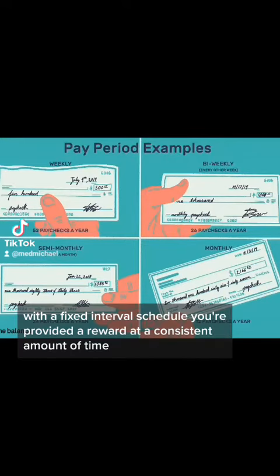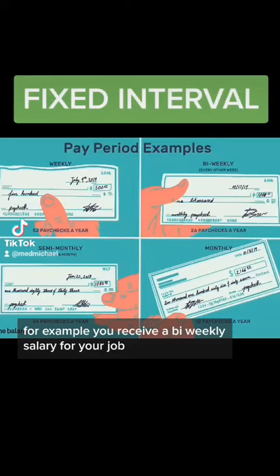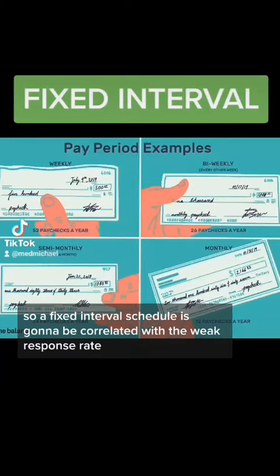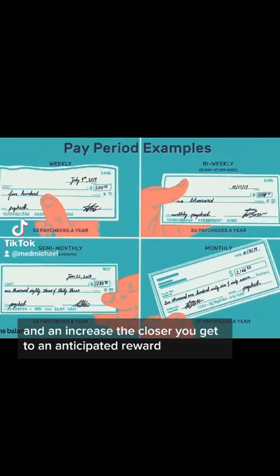With a fixed interval schedule, you're provided a reward at a consistent amount of time. For example, you receive a bi-weekly salary for your job. A fixed interval schedule is correlated with a weak response rate, with an increase the closer you get to an anticipated reward.